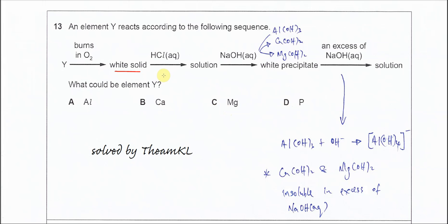After that the white solid, all the oxides react with HCl to form a solution. Solution means it's clear, means the solid dissolves. So we know that aluminum oxide, calcium oxide, and magnesium oxide, they all will react with the acid.